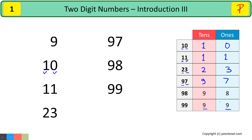Now, there is a trick. After 99, we have 100. Count the number of digits in 100. Here, we have 1, 2, and 3 digits. So, 100 is not a two-digit number. 100 is a three-digit number.